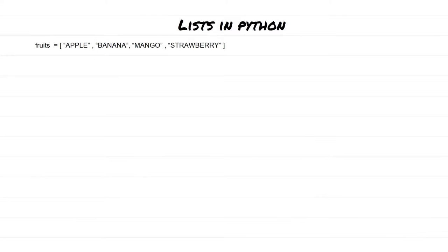We have seen how we can deal with strings in Python. In this lesson we are going to talk about lists in Python. Lists are really like strings, but the difference is that they are like a multidimensional array, whereas strings are like a single dimensional array. Let's start by understanding how lists are stored internally, and once you understand that, the rest of the things are going to feel more like strings.